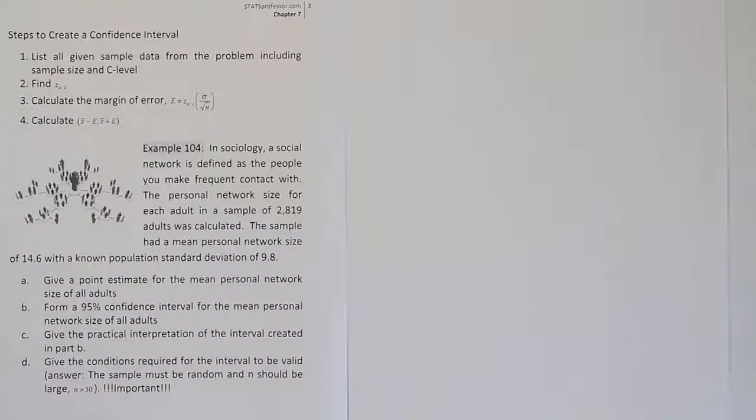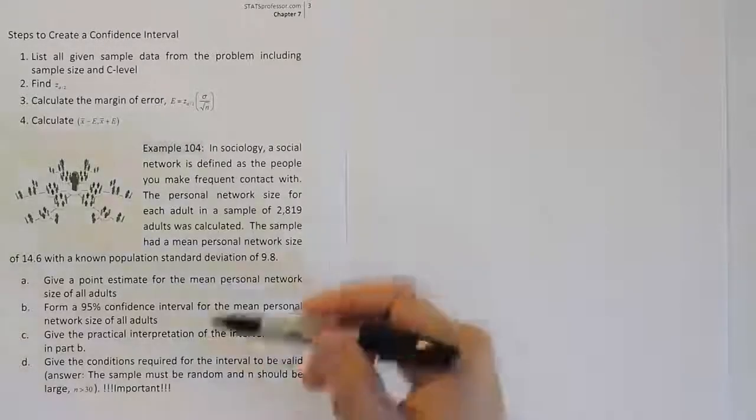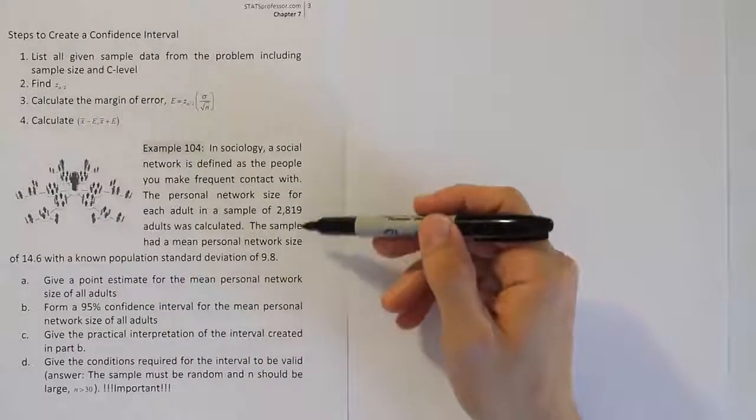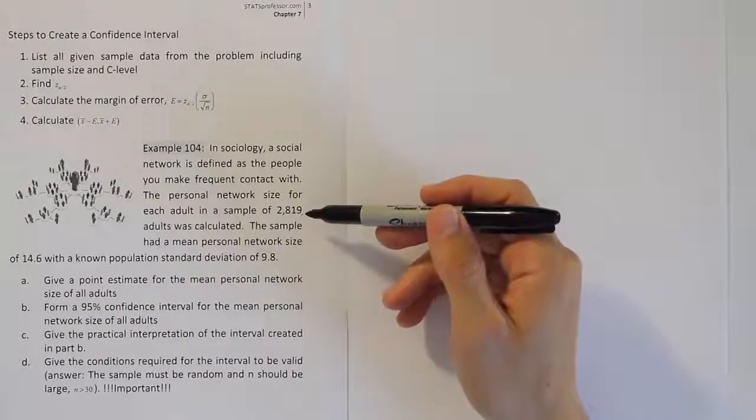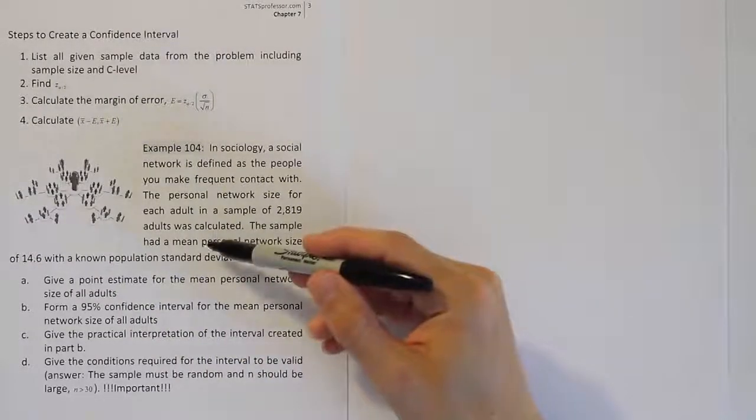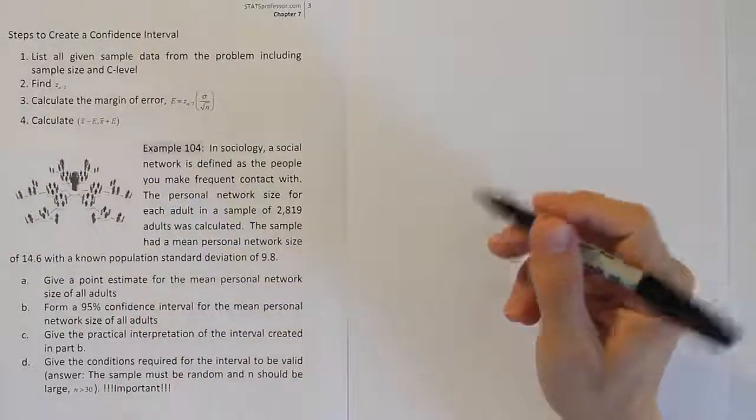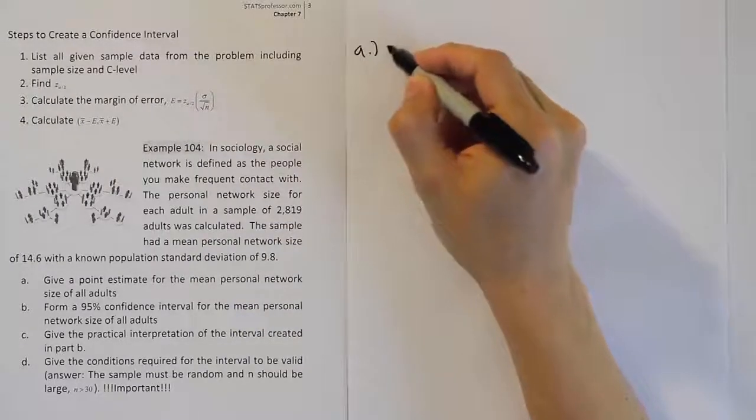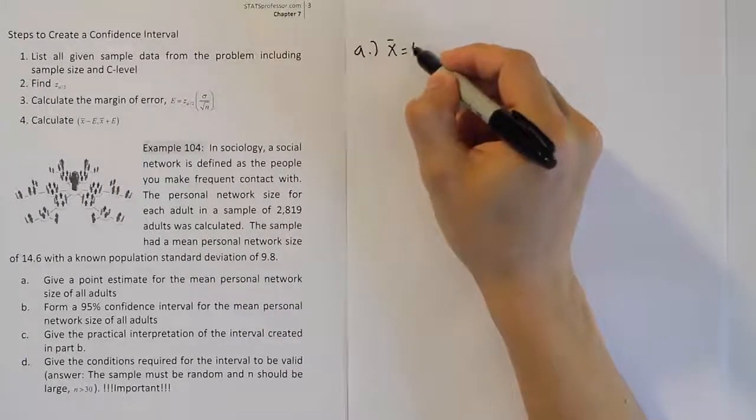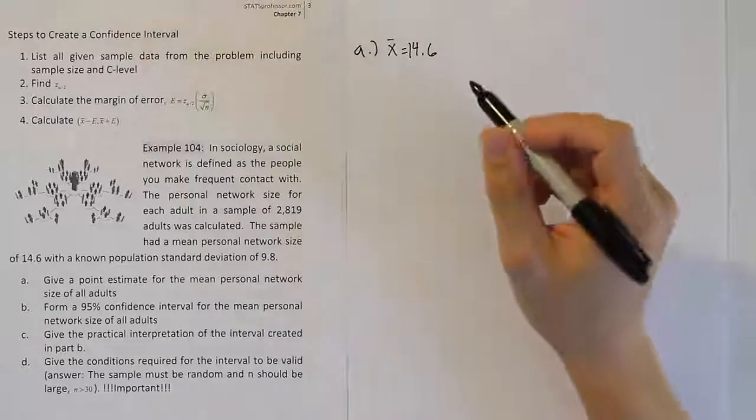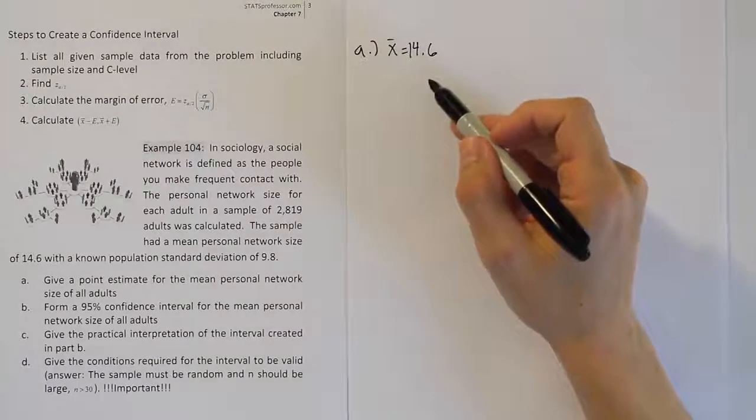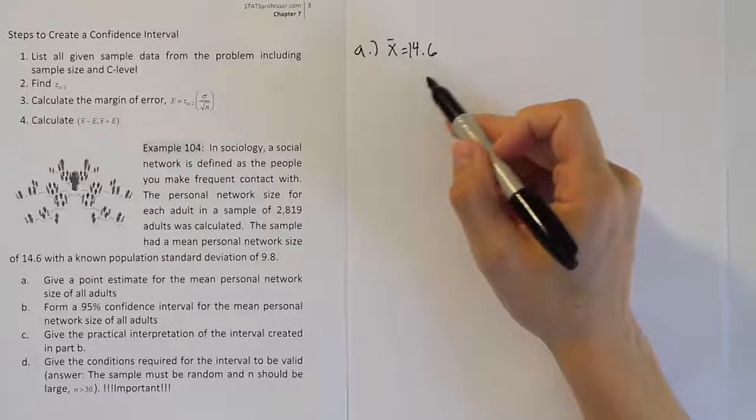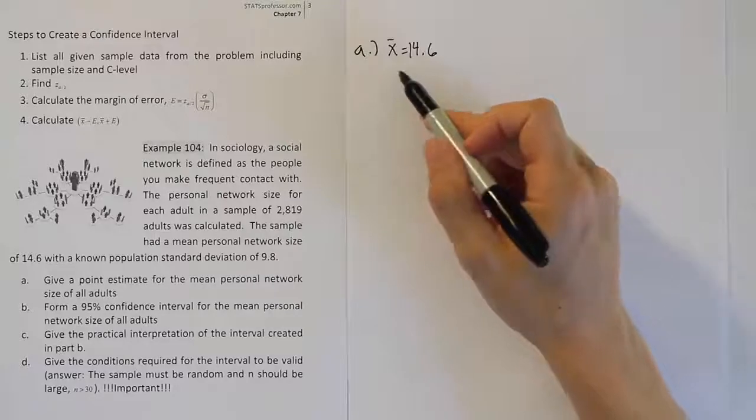If we look at this study, our best guess based on the study for that number would be the sample mean. We want to know what the mean personal network size is, so we'll use the sample mean from the study. The mean personal network size was 14.6, so the answer for Part A is X̄ = 14.6. When you're looking for a point estimator, you're looking for a single value that estimates the quantity you're interested in.